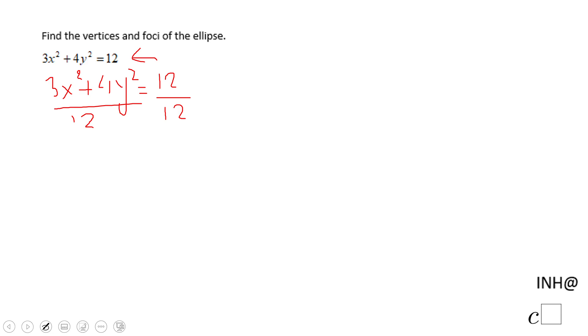And also we're going to have those quotients that we are familiar with when we have an ellipse. And here we have 3x² over 12 plus 4y² over 12 equals 12 over 12.